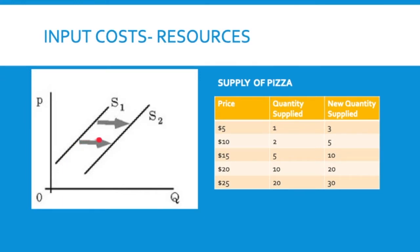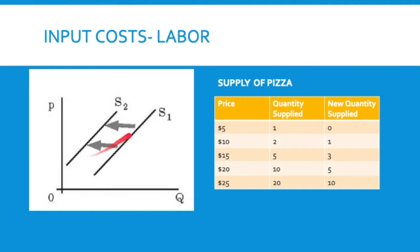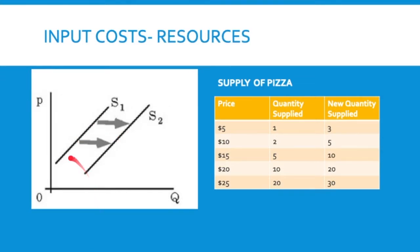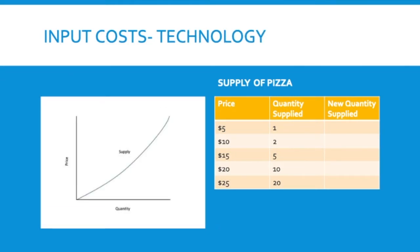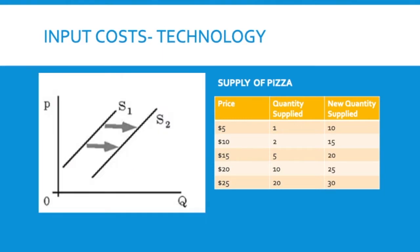That would cause a shift in the supply line to the right. Just like with demand, an increase always goes to the right and a decrease always goes to the left. If you think about technology as another input cost — if you had technology that could make pizzas more efficiently, like a specialized oven, we'd see at all these prices more production. I could produce them faster with less effort, maybe without hiring as many people. That would mean at all these different prices I'm willing to produce more pizzas, and my line would shift to the right.